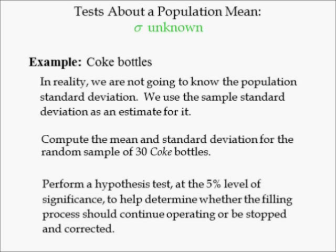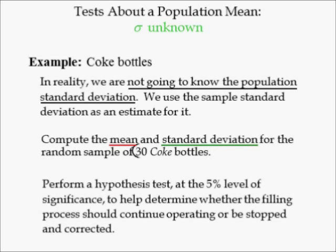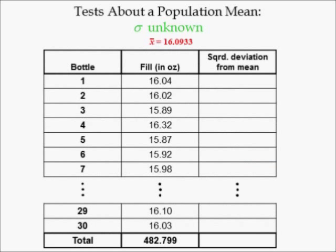Let's return to the two-tailed Coke bottle example. In reality, we are not going to know the population standard deviation, so we use the sample standard deviation as an estimate of it. We compute the mean and standard deviation for the random sample of 30 Coke bottles. Perform a hypothesis test at the 5% level to help determine whether the filling process should continue operating or be stopped and corrected. We already computed the sample mean — it was equal to 16.0933 ounces.